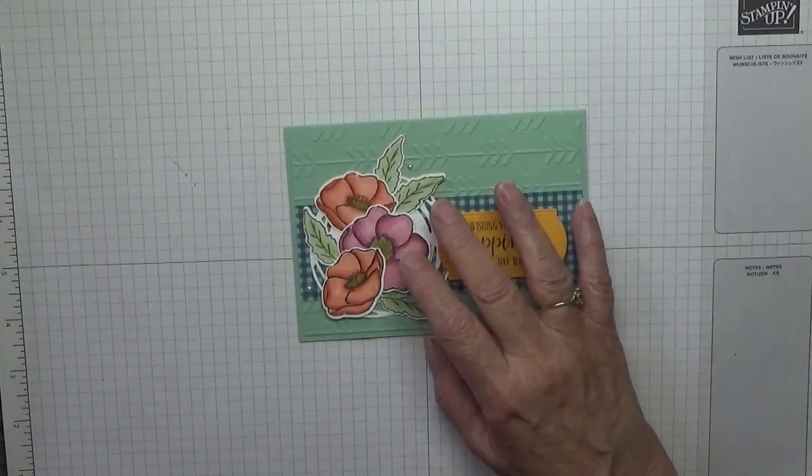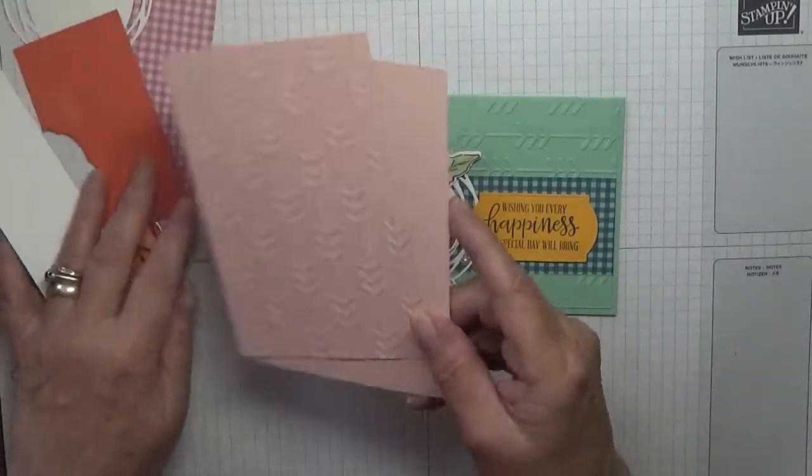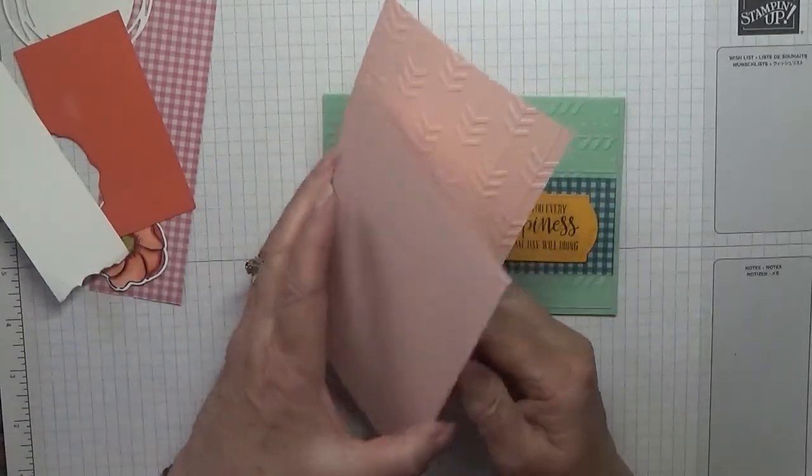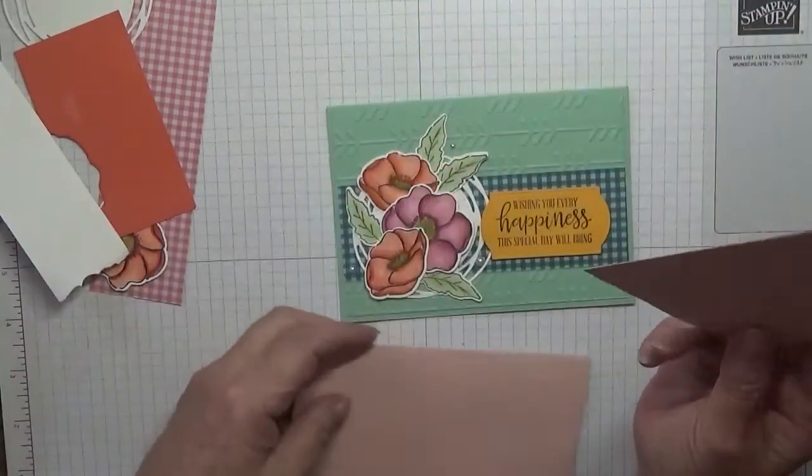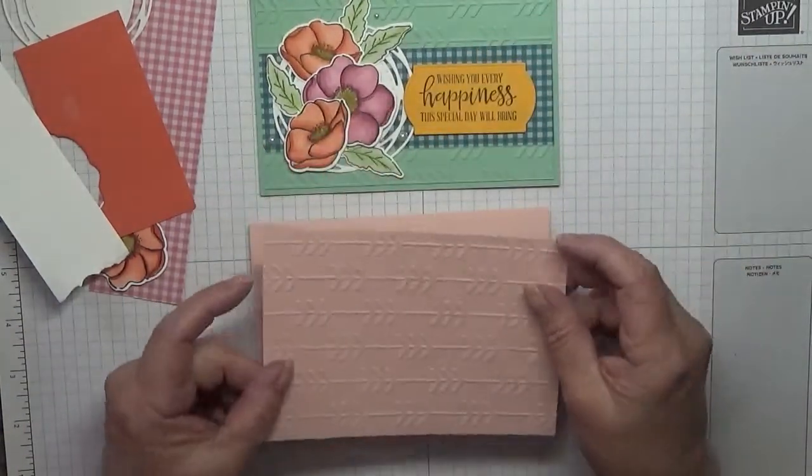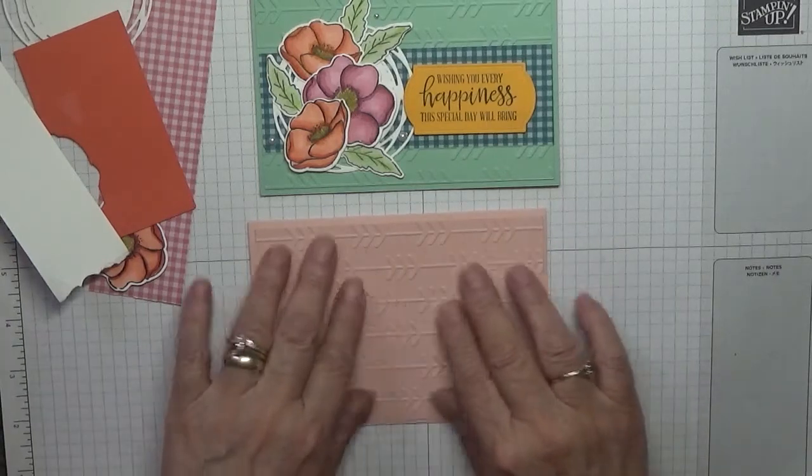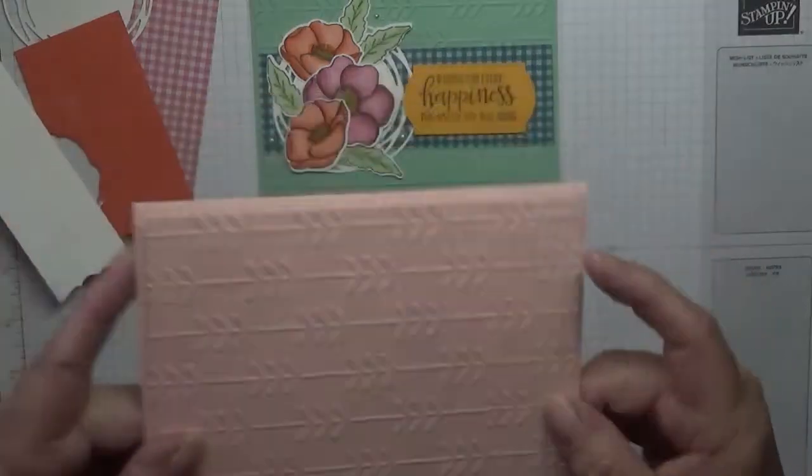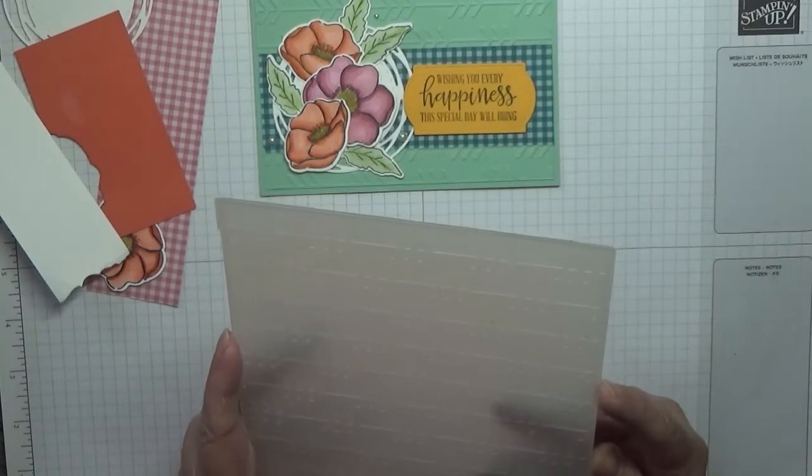For my card I'm changing the color. I have got a Blushing Bride card base of 8 and a quarter by 5 and seven eighths, scored at 4 and one eighths. Another piece of Blushing Bride at 5 and five eighths by 3 and seven eighths, and I've already embossed it with arrows.